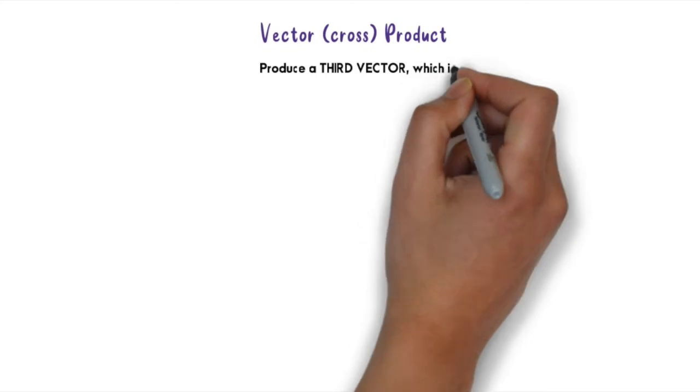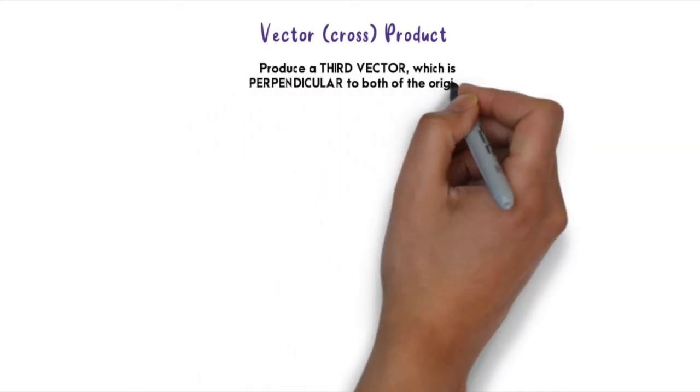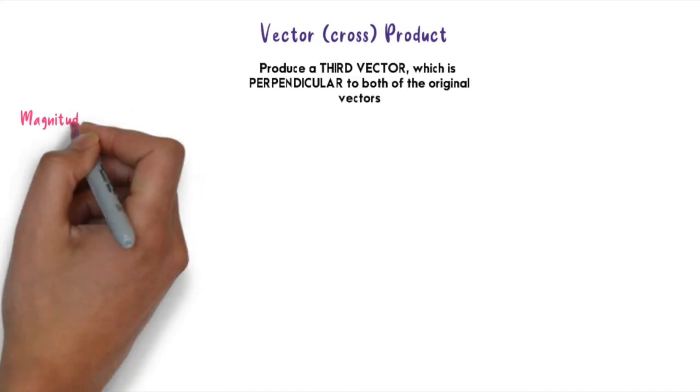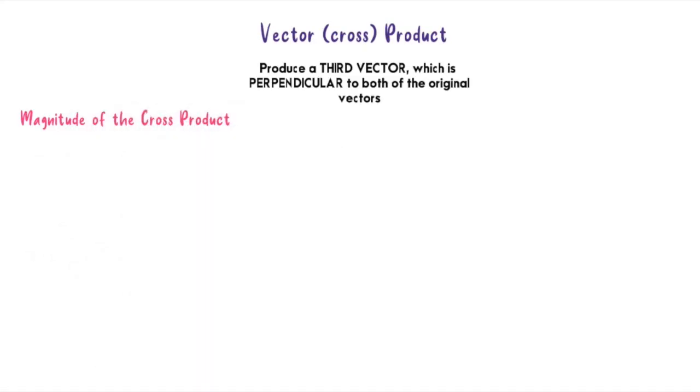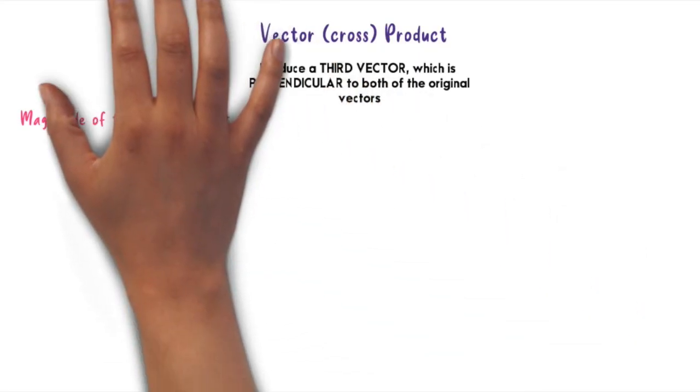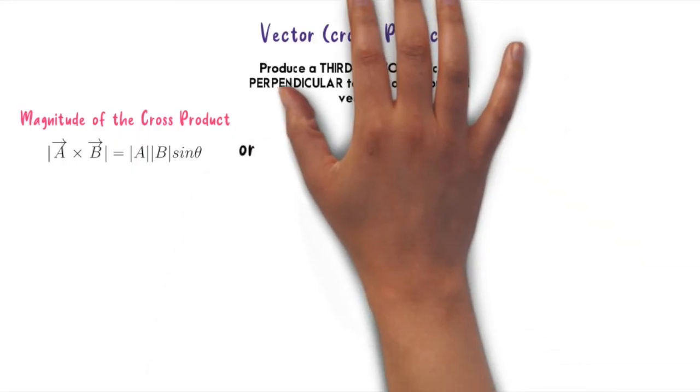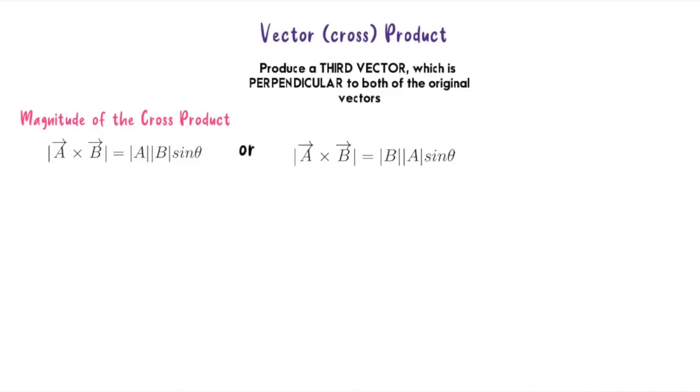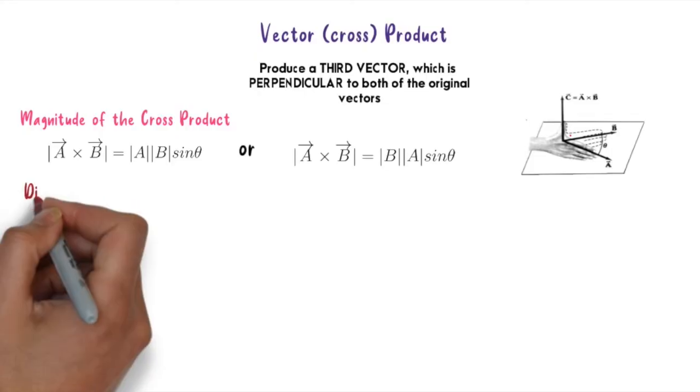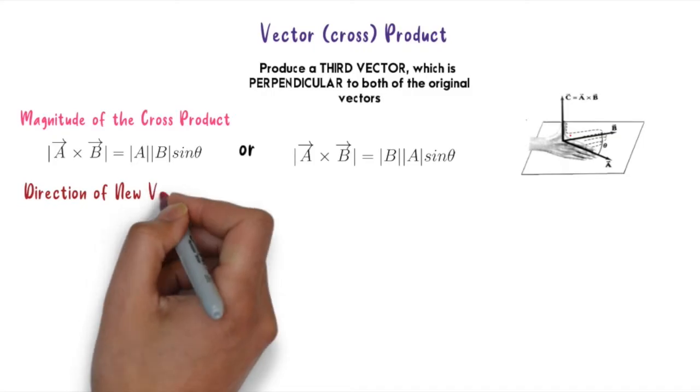Vector or cross product will produce a third vector which is perpendicular to both of the original vectors. How to calculate the magnitude of the cross product? Vector A cross vector B equals modulus A multiply with modulus B sine theta.